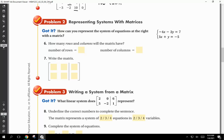Let's move on. Problem 2, representing systems with matrices. Got it? How can you represent the system of equations at the right with a matrix? So this is pretty simple. All a matrix does, guys, is you get rid of all the variables. That's all you're going to do. All these letters are variables. So we're going to get rid of the letters. No letters allowed. Kind of like a no smoking sign. No letters allowed.